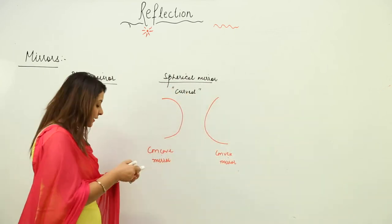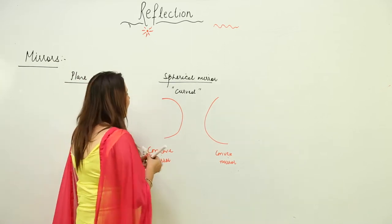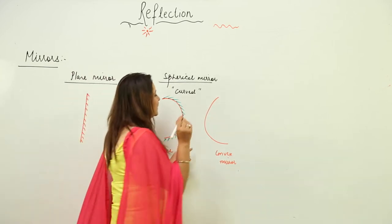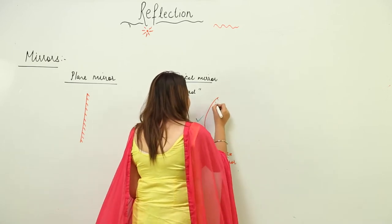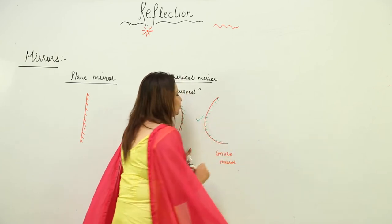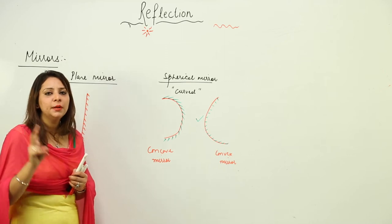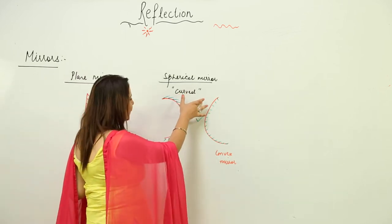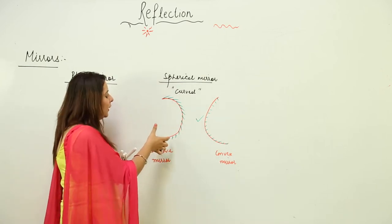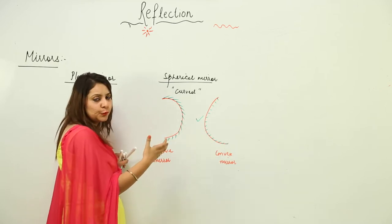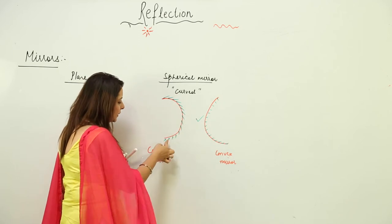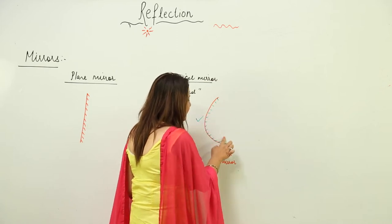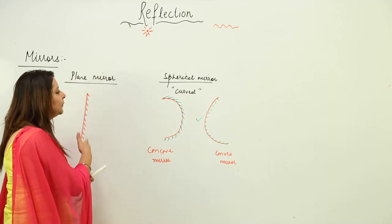The concave mirror is one in which reflection occurs from the inner side and the outer side is shiny and polished. The convex mirror is one where reflection occurs from the outer side and the inner side is polished. So we have two kinds of mirrors in optics: the plane mirror, drawn as a straight line with small oblique lines, and the spherical mirror with a curved surface.